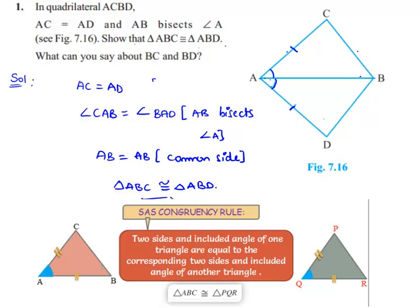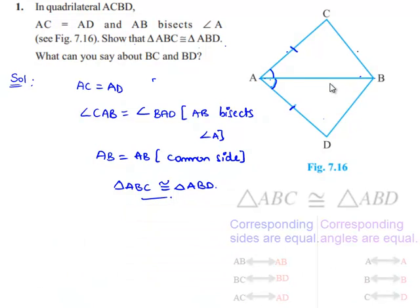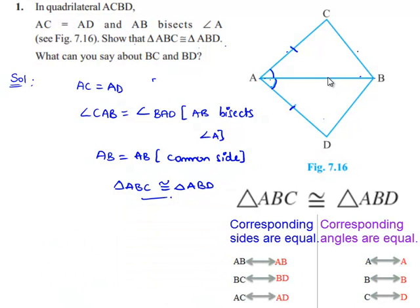Therefore, if two triangles are congruent, then their corresponding sides and angles will be equal. Therefore, we can say that BC and BD here will be equal to each other, that is BC is equal to BD.